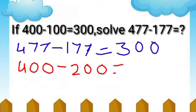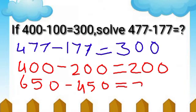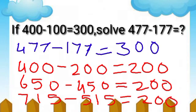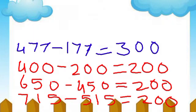400 minus 200 is equal to 200. Next: 650 minus 450 is equal to 200. Next: 715 minus 515 is equal to 200.